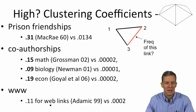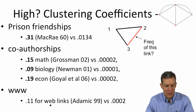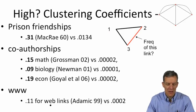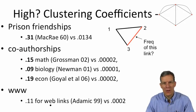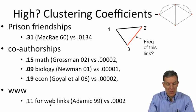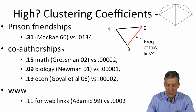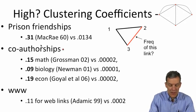And when we look in data across a variety of different kinds of data sets, we tend to see numbers which are much higher than would have occurred at random. So a study of prison relationships by McCray in 1960.